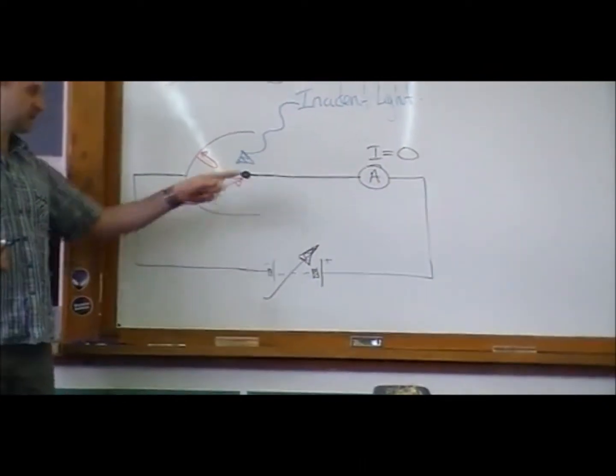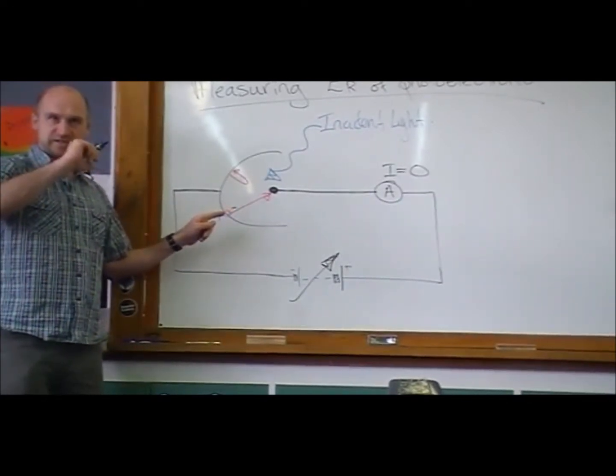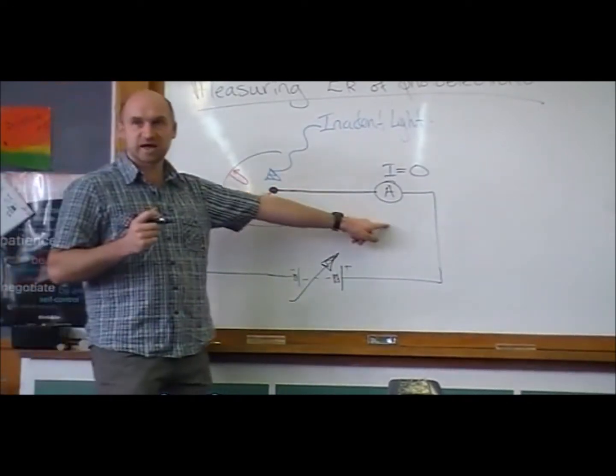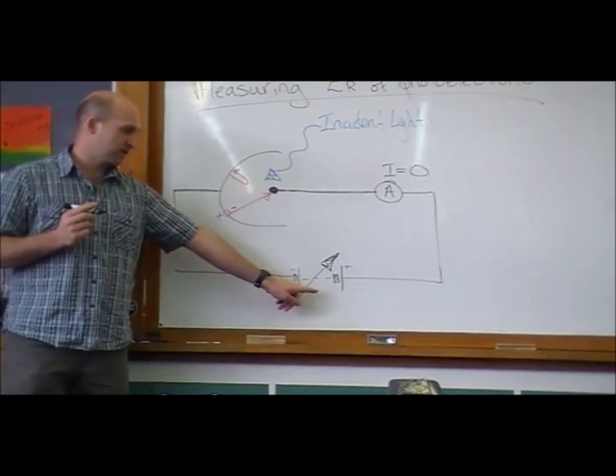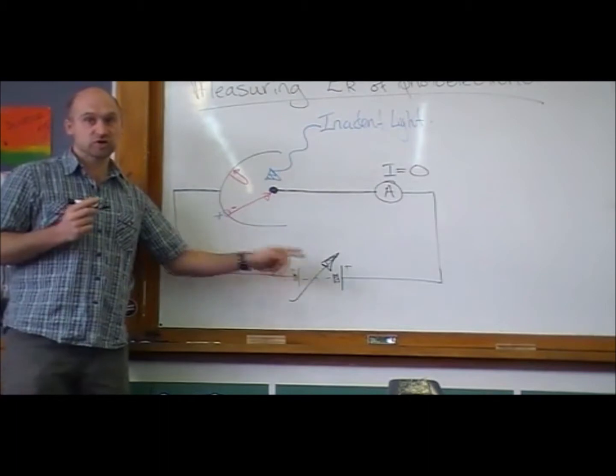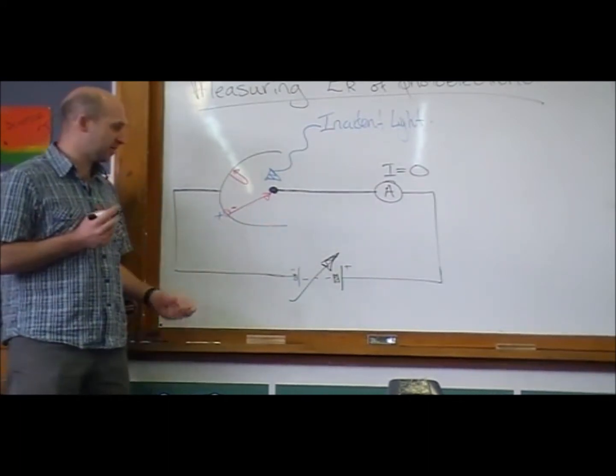And at that point when current is zero, that means if we're turning up slowly, at the instant the current hits zero, that means that we've got exactly the right voltage to turn around all of the photoelectrons. Not any of them are making it across the gap.